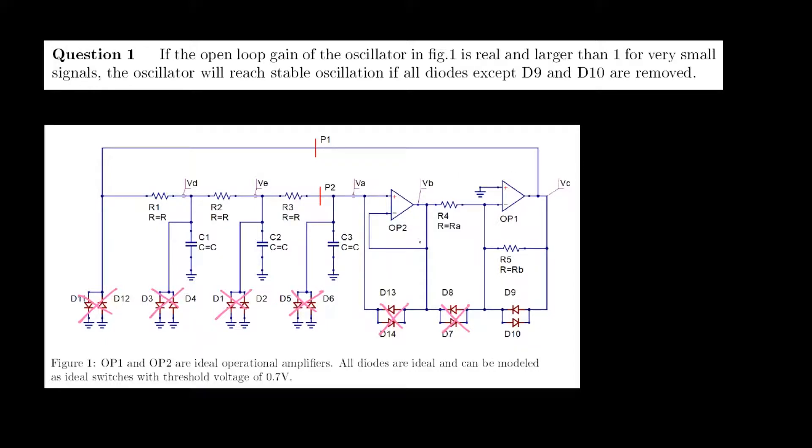This is what we call an op-amp in inverting operation, and its gain, which we'll refer to as A,